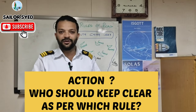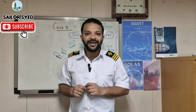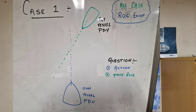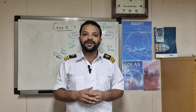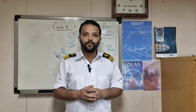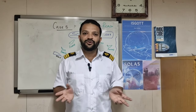This is case number one — a normal situation with one vessel coming from ahead, crossing. It's up to you how you describe it. What action will you take and as per which rule? Note that both vessels are power driven vessels.